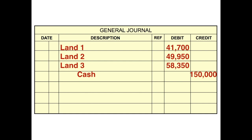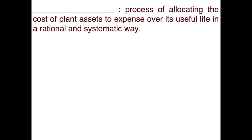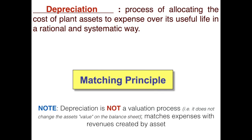Now that we know how to do a lump sum purchase, let's introduce the concept of depreciation before we get into the different methods of depreciating assets. Depreciation is simply the process of spreading the cost of an asset over its useful life, and we have different methods to calculate it. The reason we depreciate assets instead of expensing everything in the year of purchase is because typically those assets are useful over many years, not just the year we purchased them. This follows along with the matching principle.